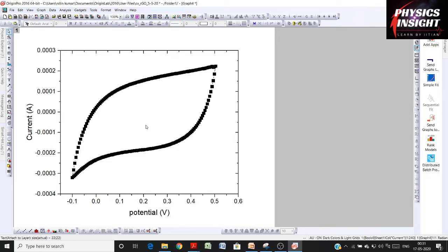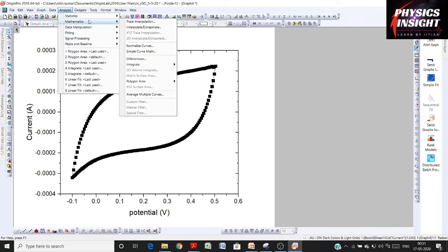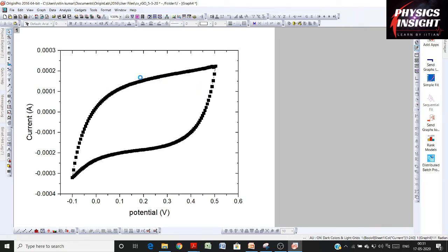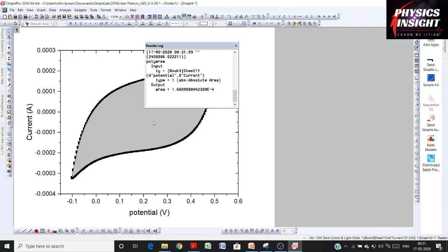Now what we need is to calculate the area under this curve. We can calculate this area by doing Analysis, then Mathematics, Polygon Area, open dialog, and just by selecting absolute area. Here we can find out the area under this curve, that is 1.66 × 10^-4 as we are seeing here.